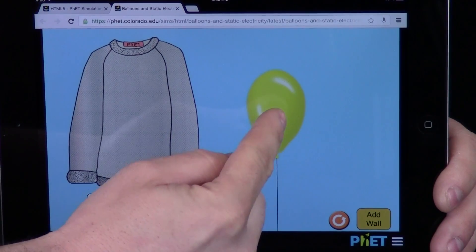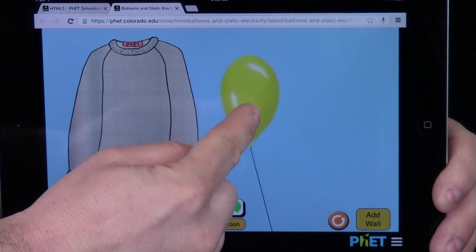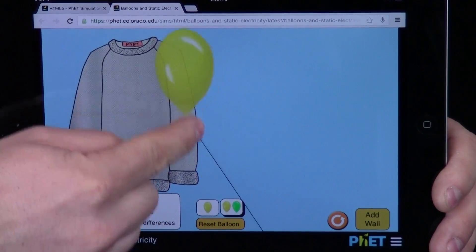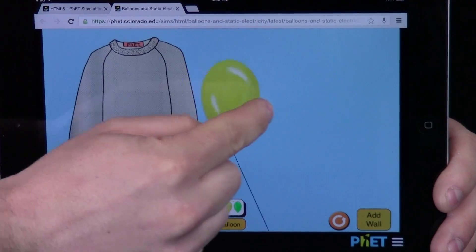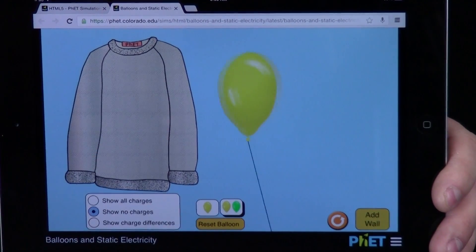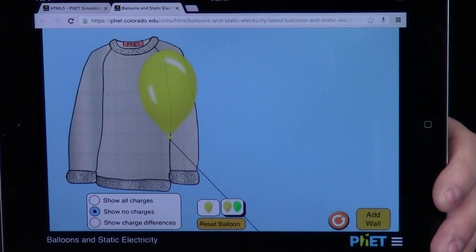This site is great because it allows me to move things around and ask questions about what's happening. I can rub this balloon on the sweater, pull it away, and let go. Why did the balloon do that?